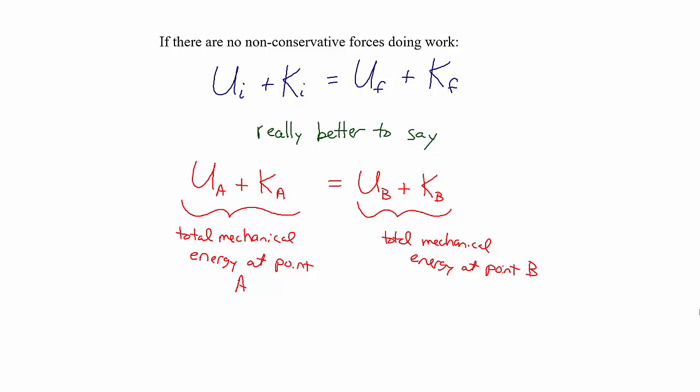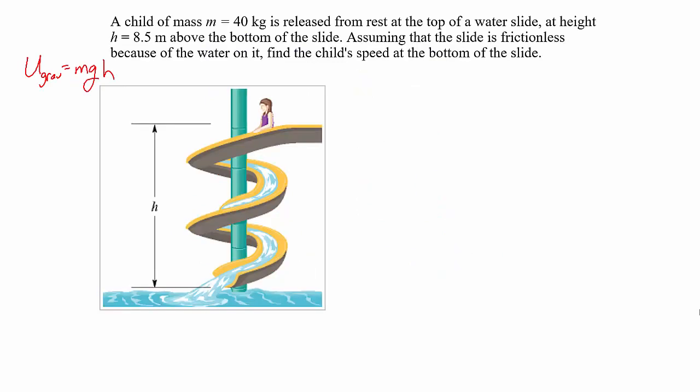In a later video we'll look at conservation of energy problems that include non-conservative forces as well. Now I'd like to look at a few simple examples showing how to use conservation of energy to solve problems. In this first problem, a child with a mass of 40 kilograms is sliding down a water slide of height 8.5 meters. We assume the slide is frictionless because of the water, so there's no work done by friction, and we want to find the speed of the child at the bottom of the slide.